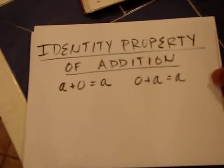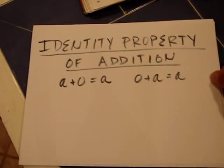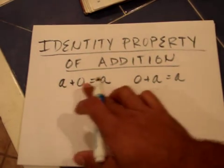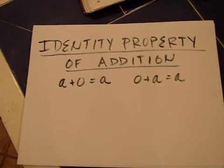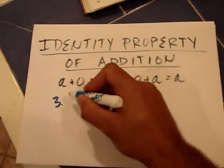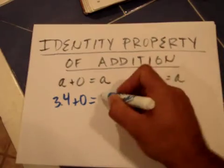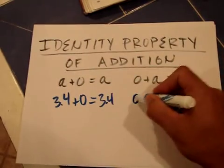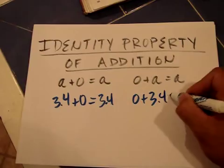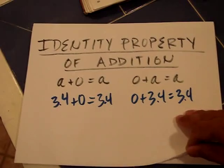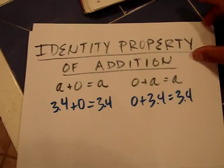The identity property of addition says that any number plus zero is still equal to that original number. For instance, 3.4 plus zero equals 3.4, and zero plus 3.4 equals 3.4. This is called the identity property of addition.